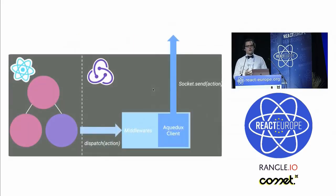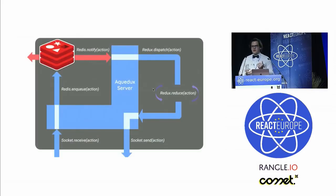You have your React application, and you dispatch an action like increment the counter. This action is intercepted by the Aqueadux middleware and is sent over the socket to the Aqueadux server. Once the action is received, it is immediately pushed to a Redis queue.